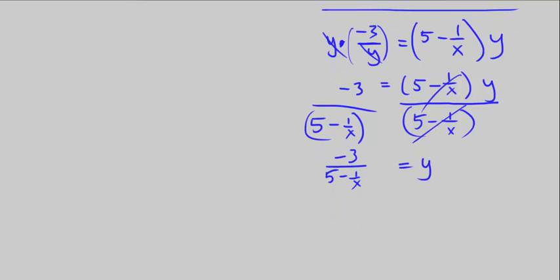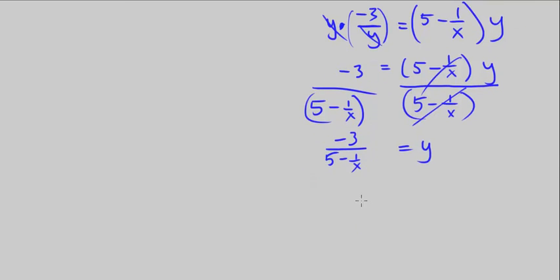Let's simplify this because it's pretty messy. We have y equals negative 3 over the quantity 5 minus 1 over x. To combine these two terms in the denominator, I'll multiply the 5 by x over x to get a common denominator of x.